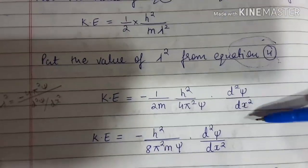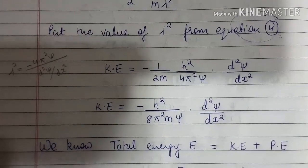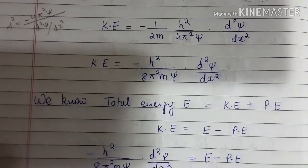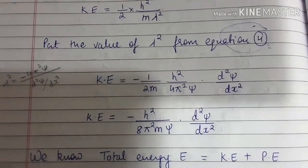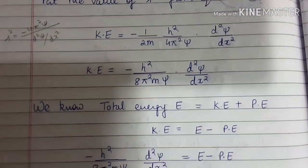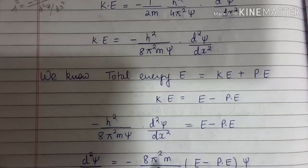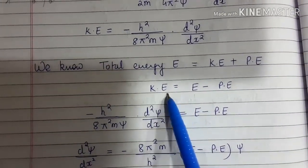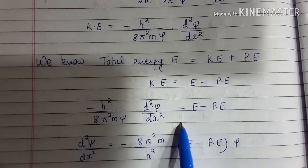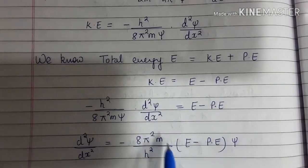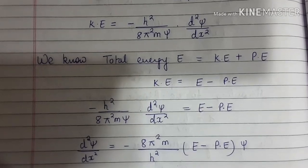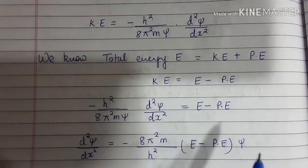We put the value of lambda squared from equation 4 into the kinetic energy formula. We also know that total energy E equals kinetic energy plus potential energy. Rearranging to find kinetic energy and substituting, we get the combined expression.